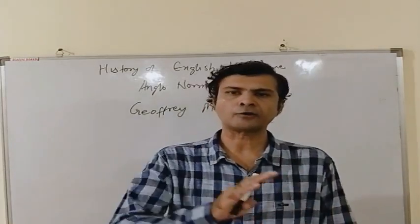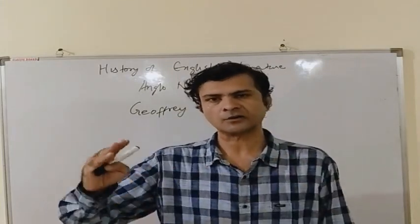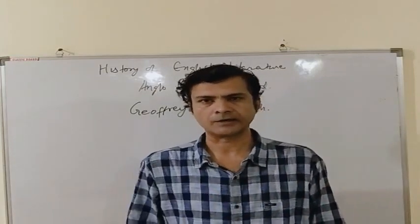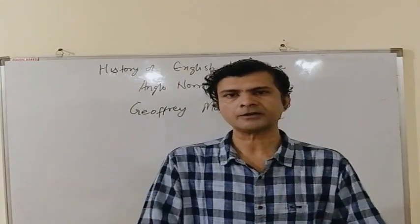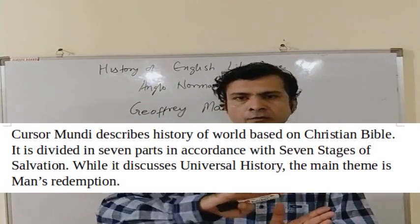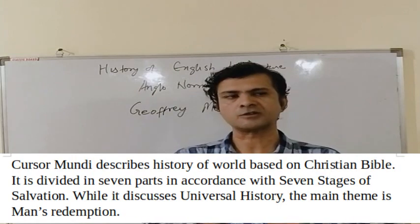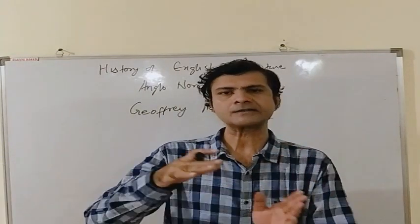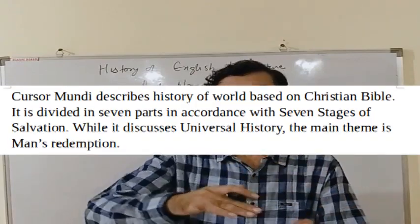Another poem of the Anglo-Norman period is Cursor Mundi, a Latin phrase which means 'Runner of the World.' This poem is historical and religious in nature and describes the history of the world based on the Christian Bible. The subject is universal history, but the main theme is man's redemption. This poem has seven parts, divided in accordance with the seven stages of salvation.